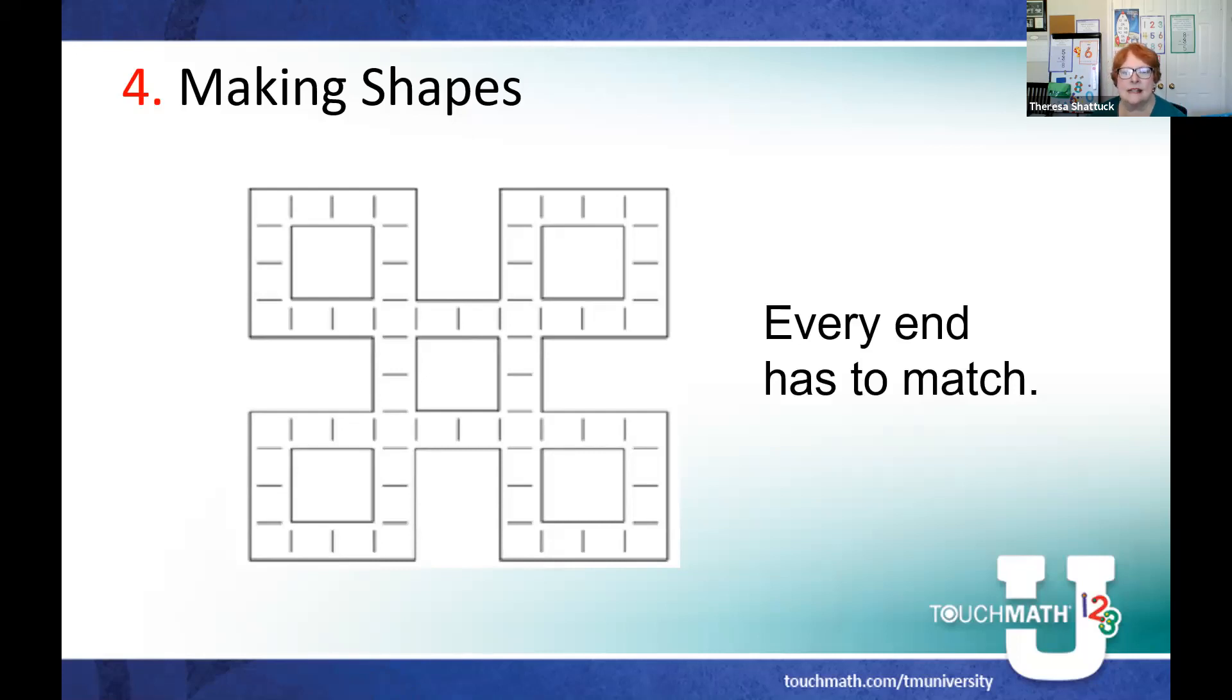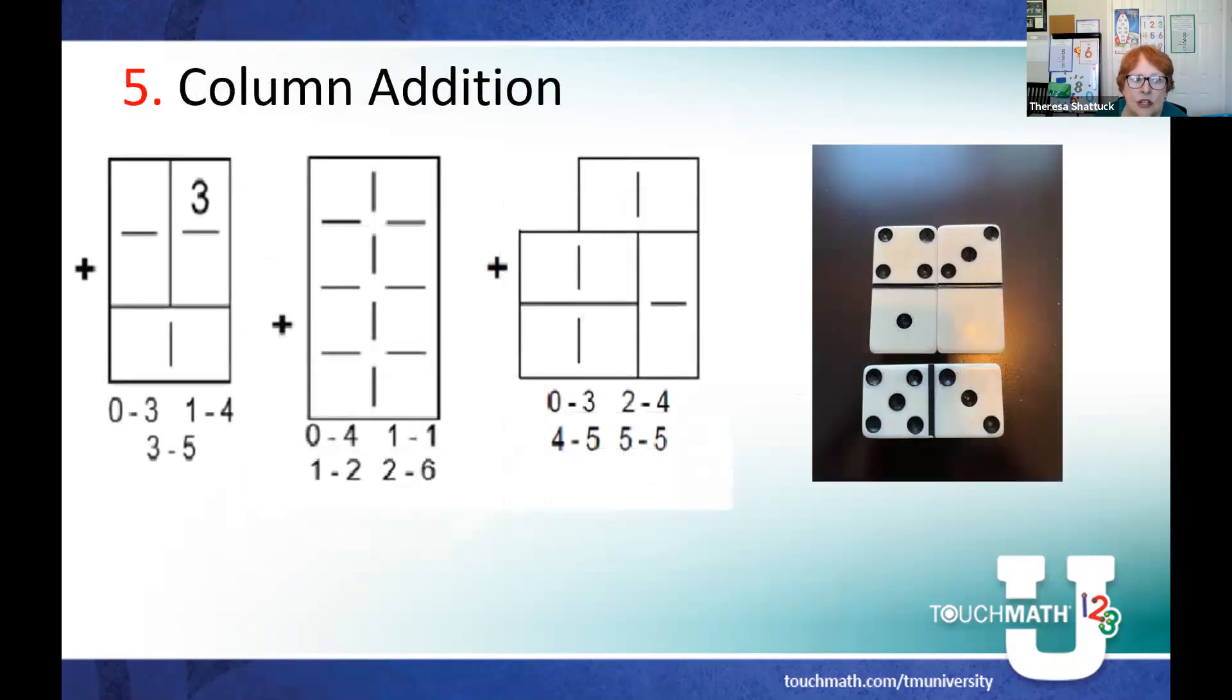The number five way to use them is column addition. Now I'm going to tell you something - this is not easy. If I'm given these three dominoes: the zero three, one four, and three five, I have to make a problem with the correct answer by using those three dominoes. I'm giving a hint by putting a three there.